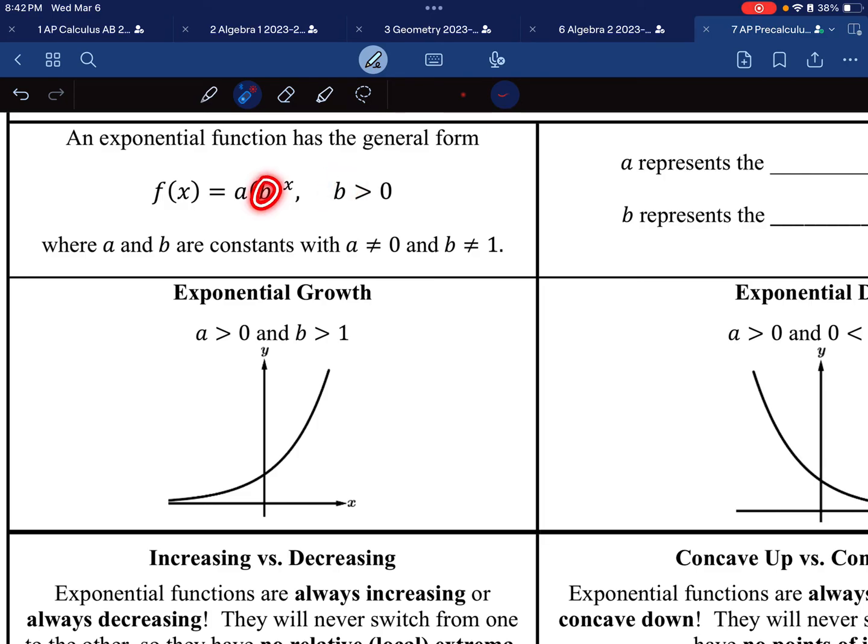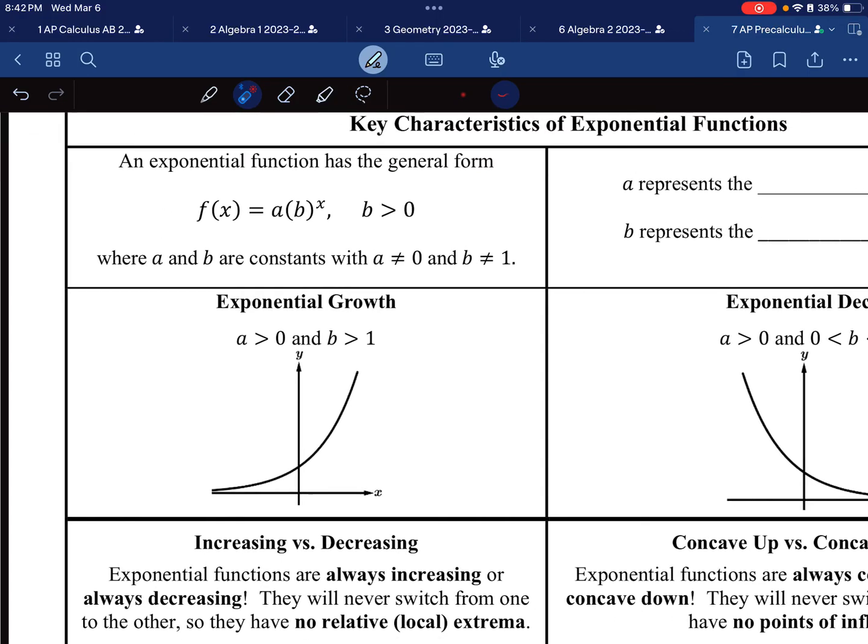We're going to assume that common ratio is positive, because if this is negative, this will alternate between positive and negative numbers. We want to keep it always positive. And we're assuming a is not 0 and b is not 1.